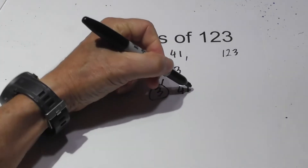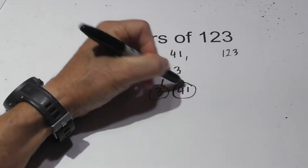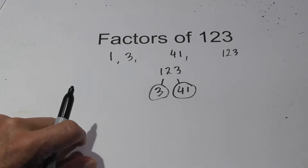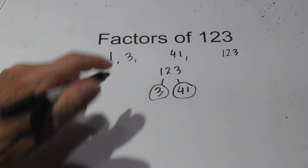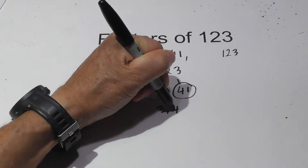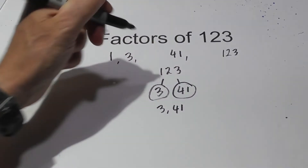They are both primes, so I will circle them. The prime factors of 123 are 3 and 41.